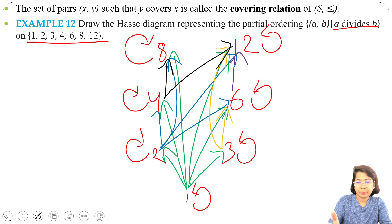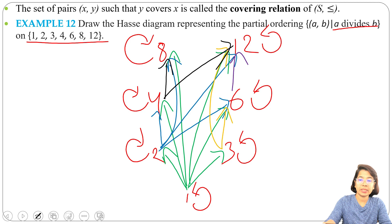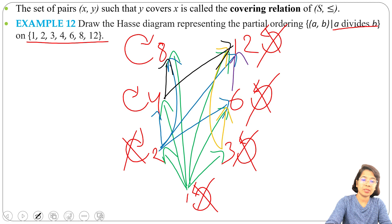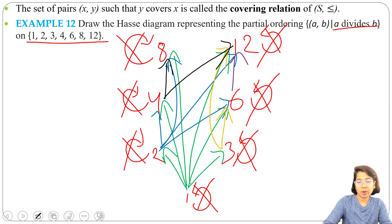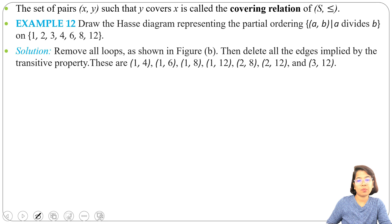This diagram for the division relation is very messy and hard to understand. We draw diagrams to better understand the relation, so we simplify it. First, remove all self-loops since the relation is a partial order and reflexivity is obvious. Next, remove all transitive edges: 1 is related to 2 and 2 is related to 4, so remove edge 1→4; 1 is related to 3 and 3 is related to 6, so remove edge 1→6. Also remove edges 1→8, 1→12, 2→8, 2→12, and 3→12.